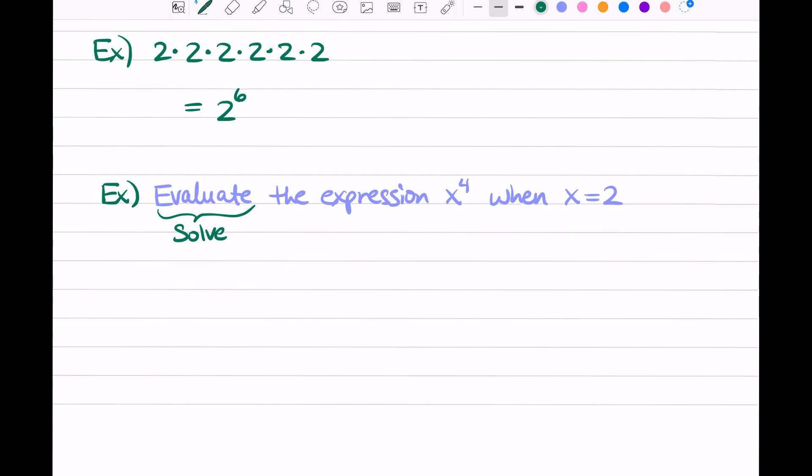Solve the expression x to the fourth. So an expression is just some combination of variables and operations, right? So we have x to the fourth, so we're just multiplying x four times. And let's mark our base and our exponent. Any time you see a variable or a number with another number to the top right, we're using exponents.